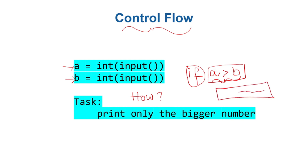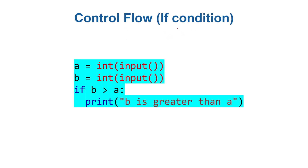This `if` condition is really powerful and is available in all programming languages. Let's see: `a` is an input, `b` is an input. Writing an `if` condition — `if` is a keyword, followed by a comparison we've done before, and then the syntax requires a colon. If this comparison returns `True` — remember comparisons return boolean values — you go into this block and execute the statement inside, for example `print('b is greater than a')`.